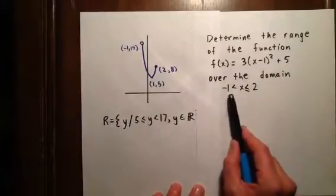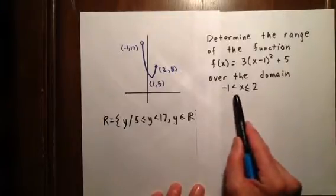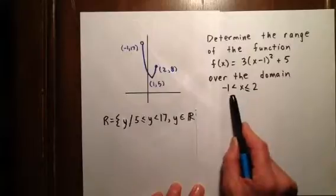So x is never actually equal to -1. So at an x value of -1, we should have an open circle. See, -1 is not technically in this domain. It's right on the boundary of it, though.